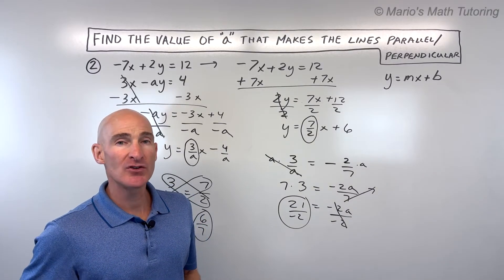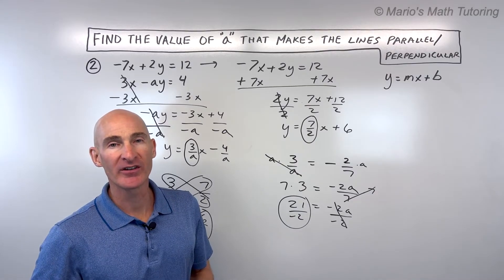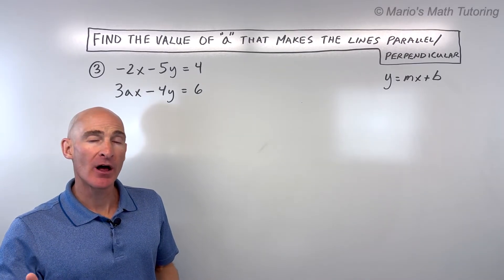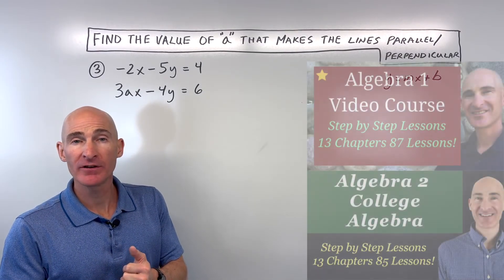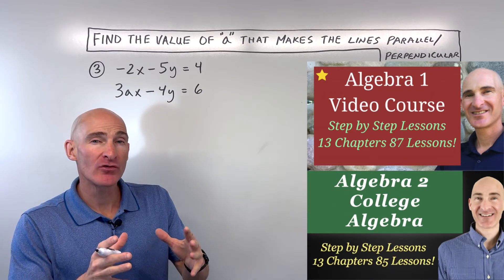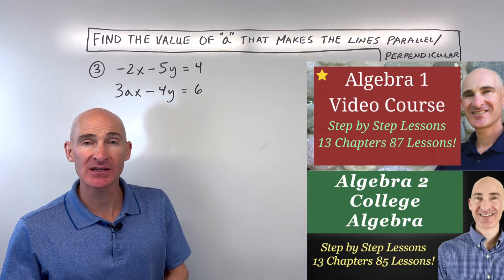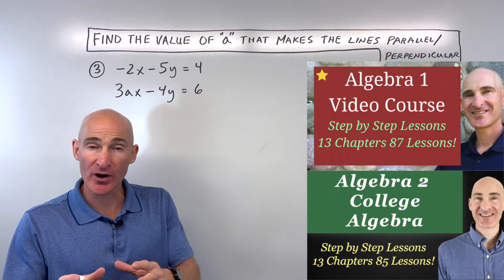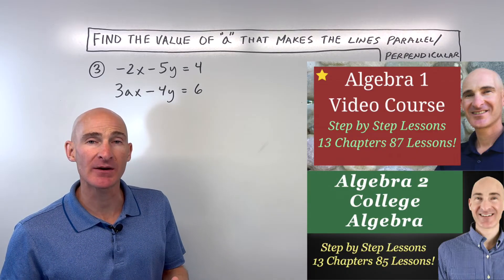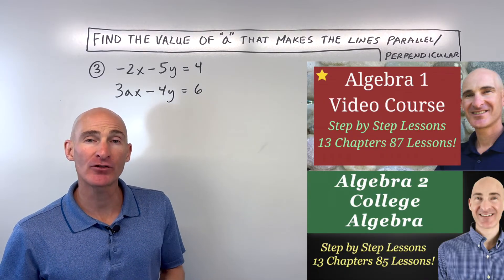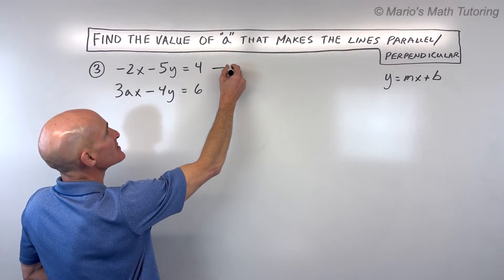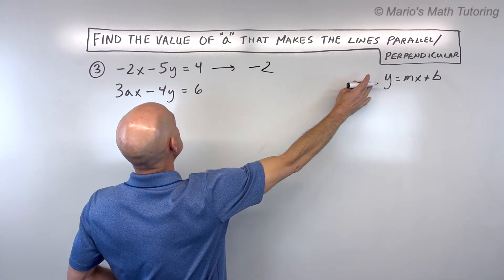Let's take a look at one more example — see if you can do it on your own and then we'll go through it together. I also want to mention my two courses for sale: an Algebra 1 video course and an Algebra 2/College Algebra video course, linked in the description below. They have about 85 lessons that build progressively. Now let's look at this last example, rewriting the equations in slope-intercept form by solving for y.